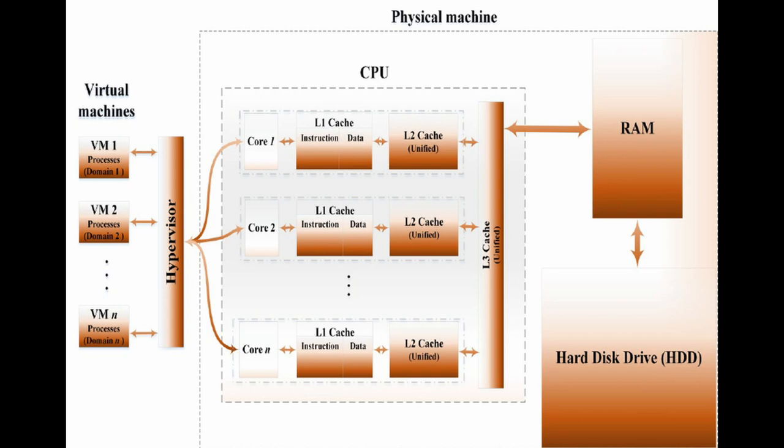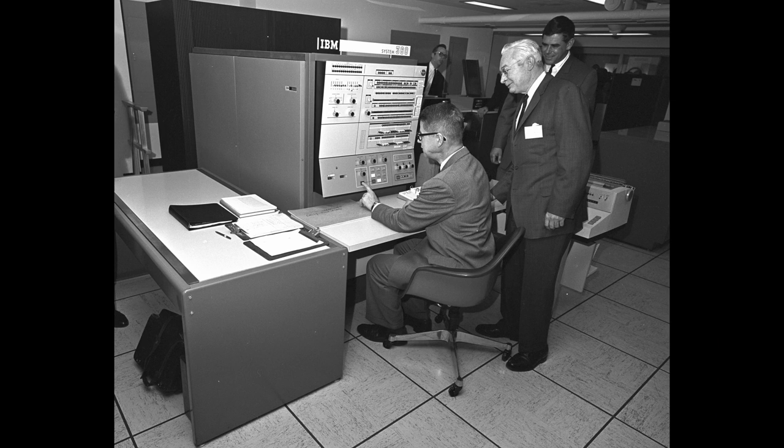The first commercial computer with a cache was the IBM 360-A5, introduced in 1970, which had a small, high-speed memory integrated into the CPU. This cache was used to store frequently used instructions and data, improving the performance of the computer.